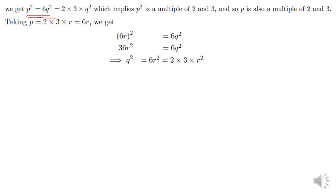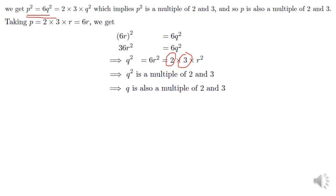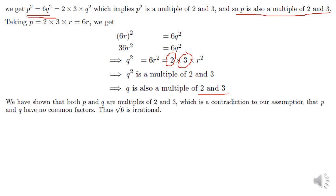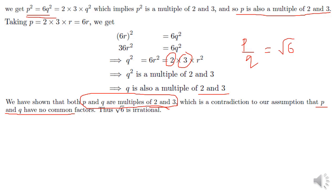Dividing by 6 gives Q² equals 6R², which equals 2 times 3 times R². So Q² is a multiple of 2 and 3, meaning Q is also a multiple of 2 and 3. Earlier P was a multiple of 2 and 3, and now Q is also a multiple of 2 and 3. This means P and Q have 2 and 3 as common factors, which contradicts our assumption that P and Q have no common factors. This contradiction arose from assuming root 6 is rational, so root 6 is an irrational number.